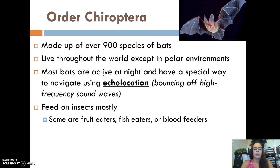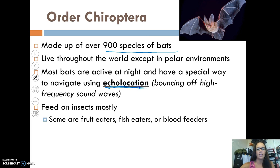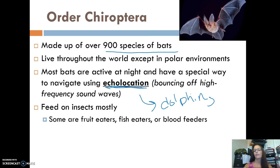The first order is order Chiroptera, made up of over 900 species of bats. They live throughout the world except in polar environments, are usually active at night, and communicate using echolocation — similar to how dolphins use echolocation to help with prey search in water. Bats usually feed on insects, although some feed on fruit, fish, or even blood.